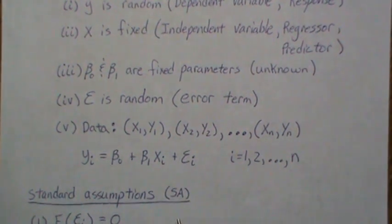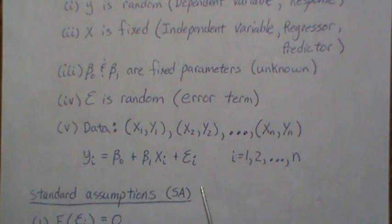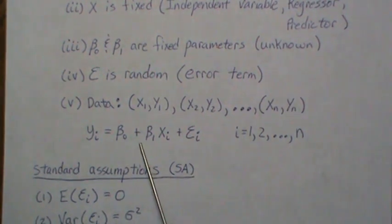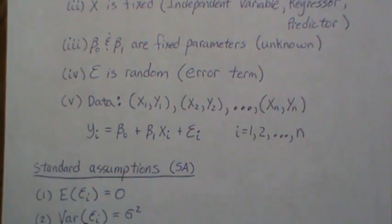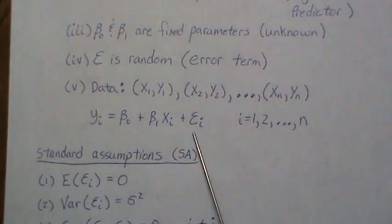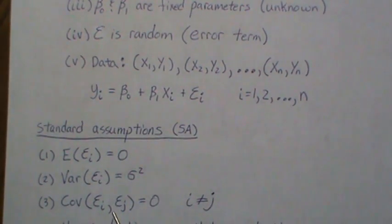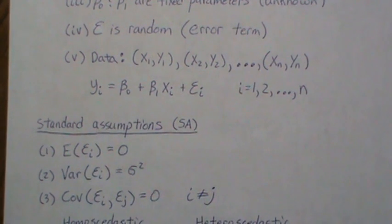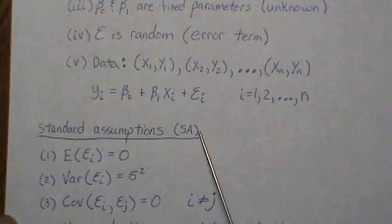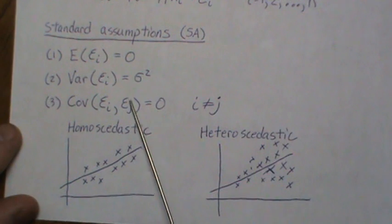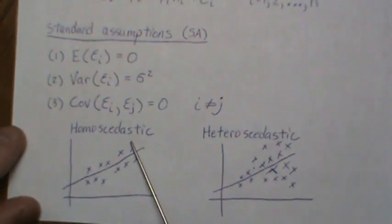The standard assumptions, which we'll abbreviate SA, are: SA1 — the error term has a mean of zero, so on average the data follows a line; SA2 — the variance of epsilon is sigma-squared, a constant around the line; SA3 — the covariance between the epsilons is zero.